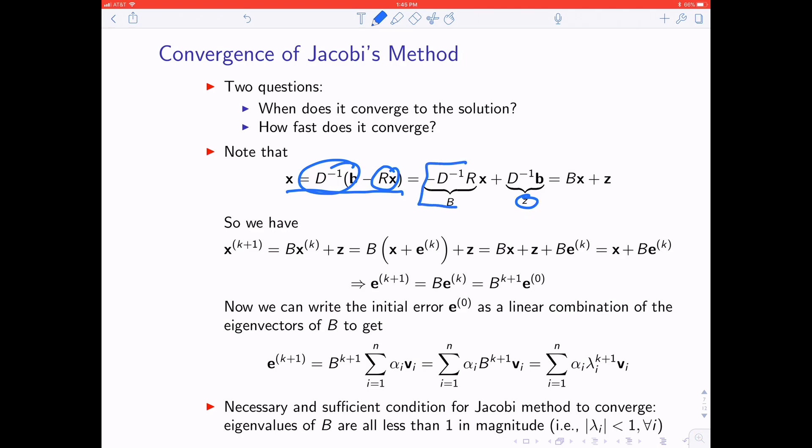We're going to call this bit, minus D inverse R, the matrix B. So what the Jacobi iteration really says is your next guess for X is equal to B times your current guess plus this Z vector. We're going to write the kth guess for X as the exact value of X, which we don't know, plus whatever the error is at the kth step, plus our Z term. If we distribute, we can write this as Bx plus Z plus B acting on the kth error. Of course, Bx plus Z is just another name for X.